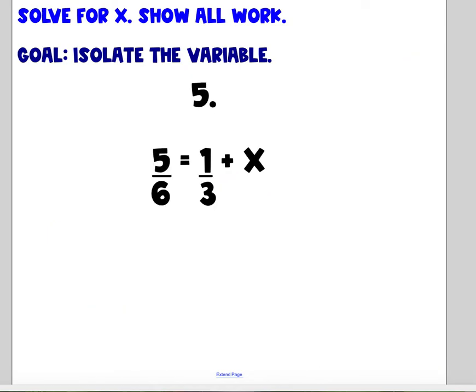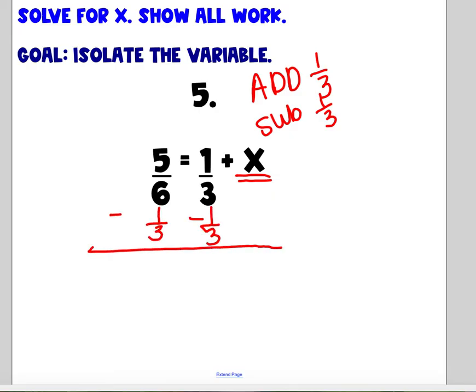Number 5. I want to throw lots of fractions at you. The only way to get better at solving equations with fractions is to embrace the fraction. Look at what my variable is doing. I'm adding 1 third. So the opposite, the inverse, is to subtract 1 third. So I'm going to subtract 1 third here and on the other side of the equal sign. So I'm left with x equals. What is 1 third minus 1 third? Zero. So I'm left with 5 sixths minus 1 third.